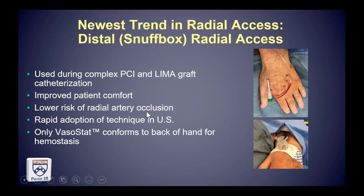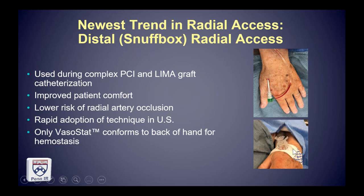It was also found to have a lower risk of radial artery occlusion and was rapidly adopted initially in Japan, India, and then throughout the rest of the world including the US. This was actually serendipitous during device development because all the other balloon-type devices failed miserably for dorsal radial access unless dismantled or taped up with cumbersome tape. The VasoStat device conforms perfectly to the back of the hand for hemostasis of the dorsal or distal radial artery.